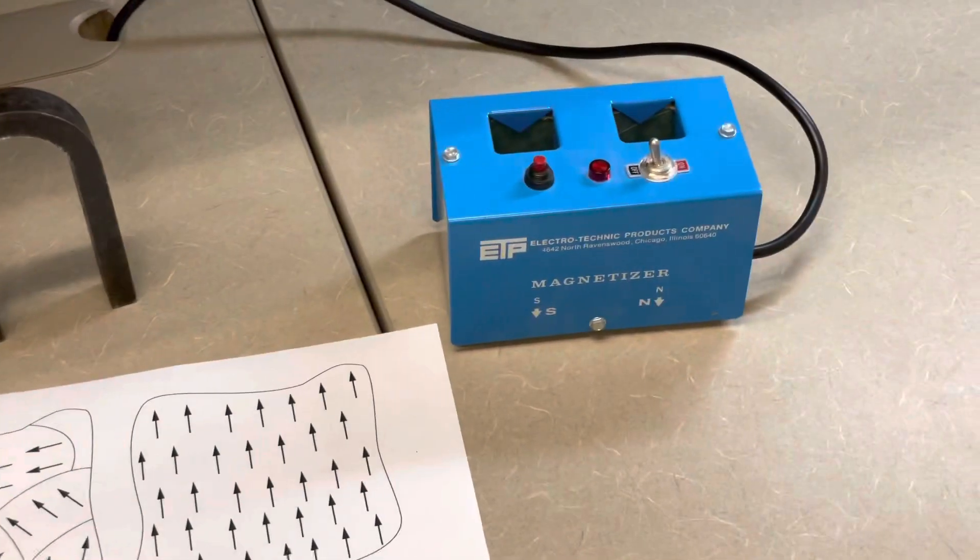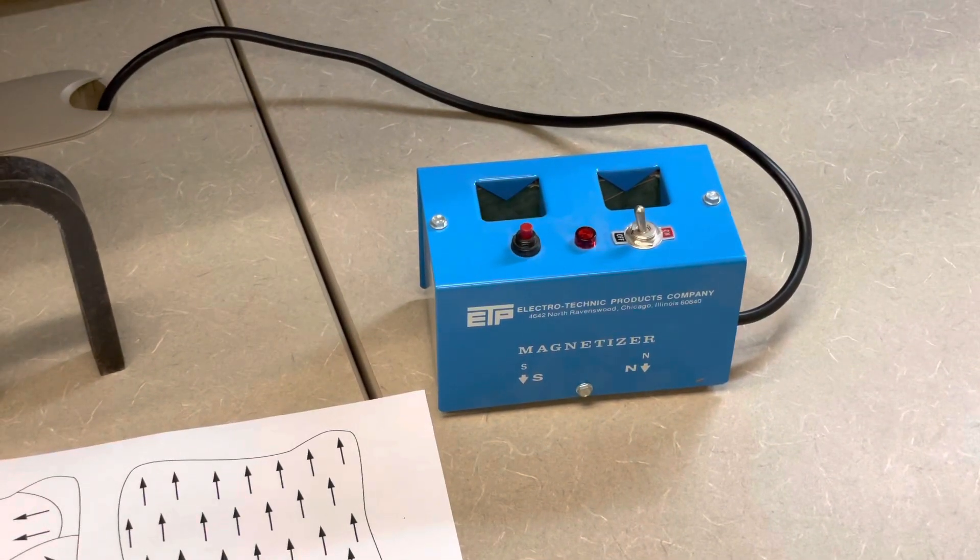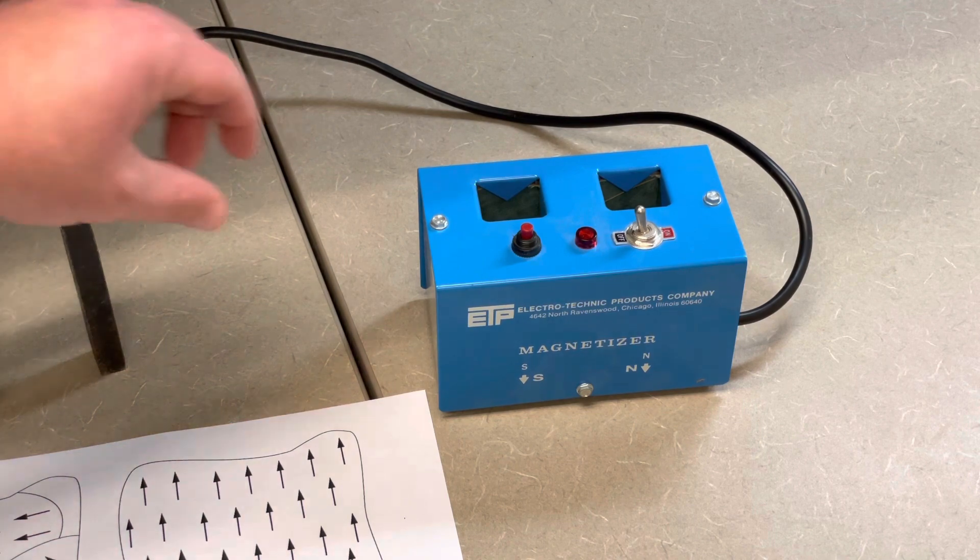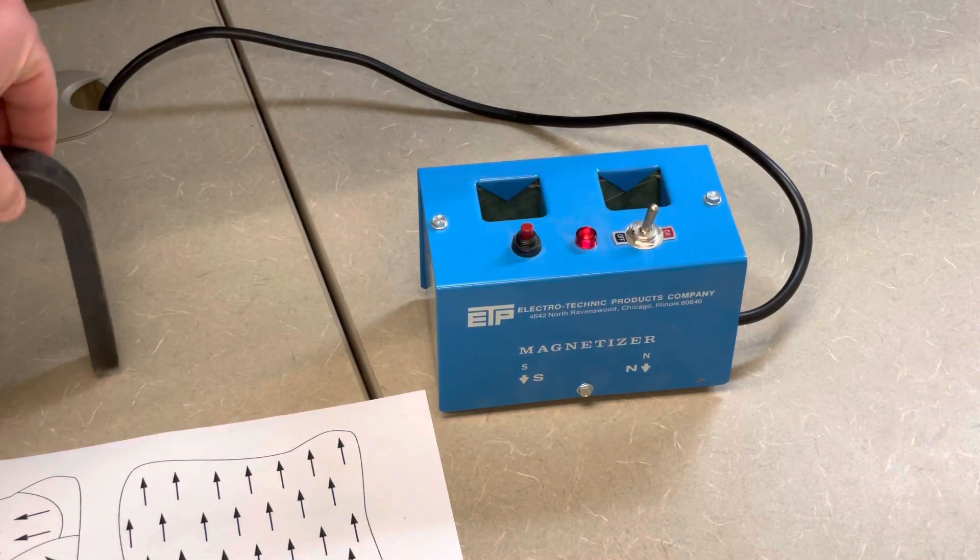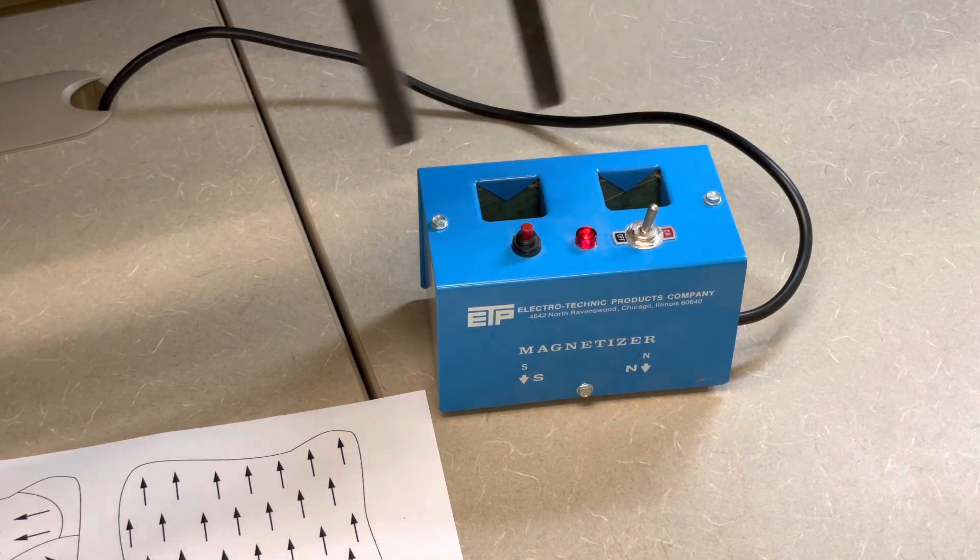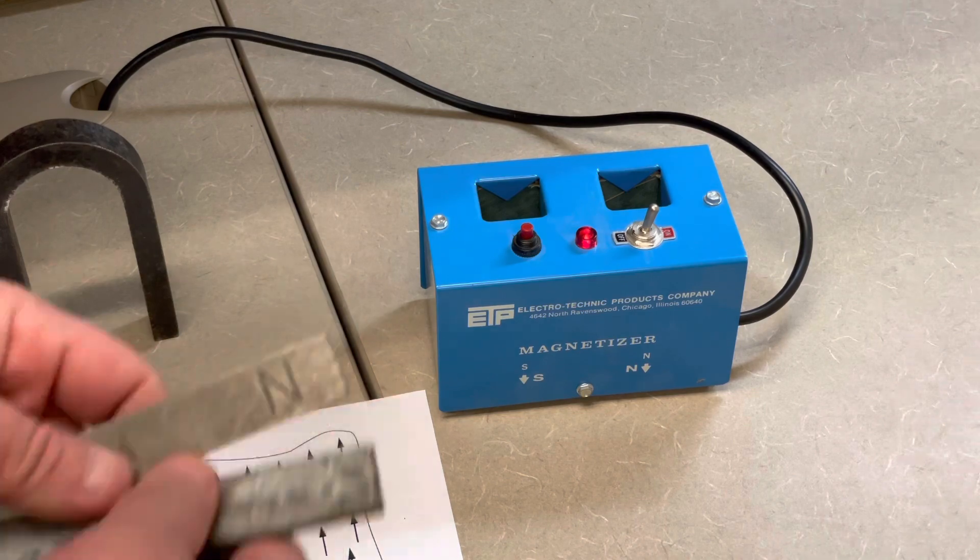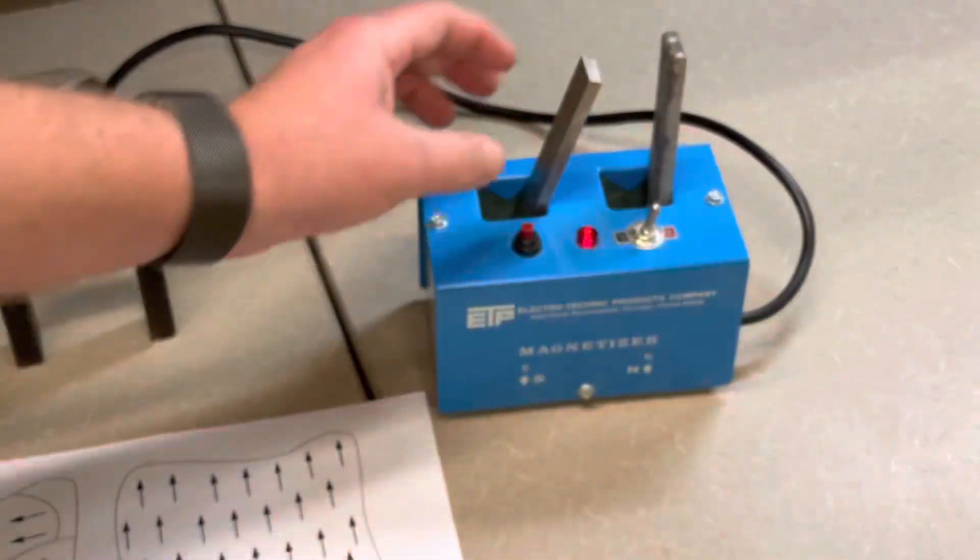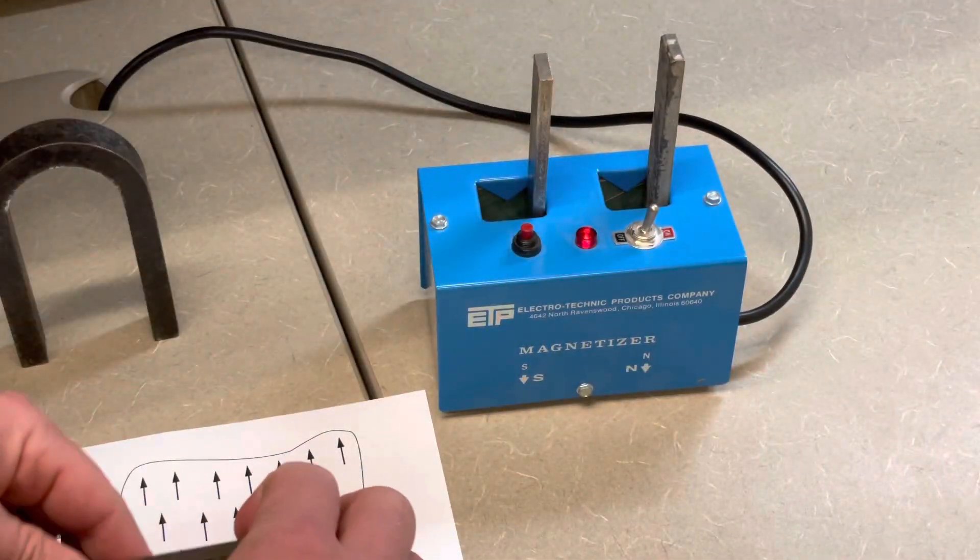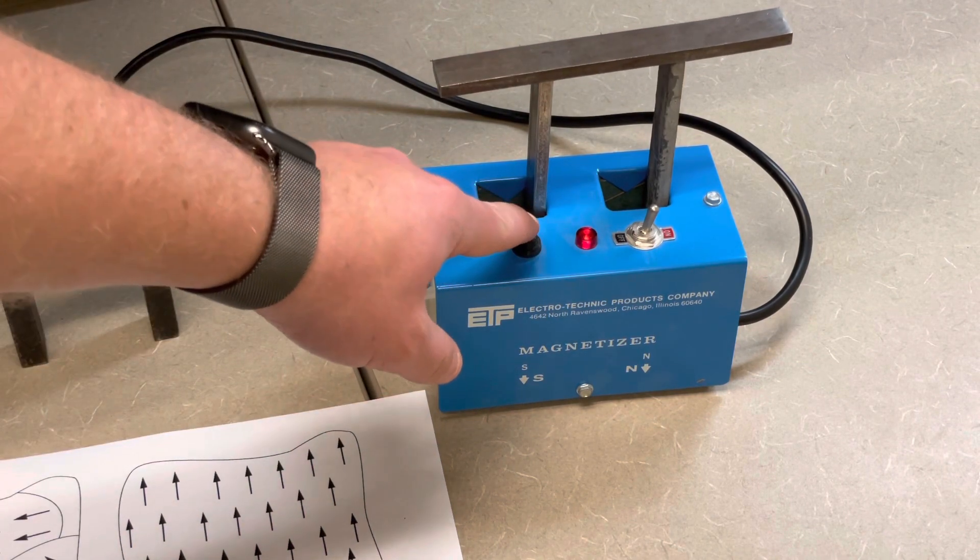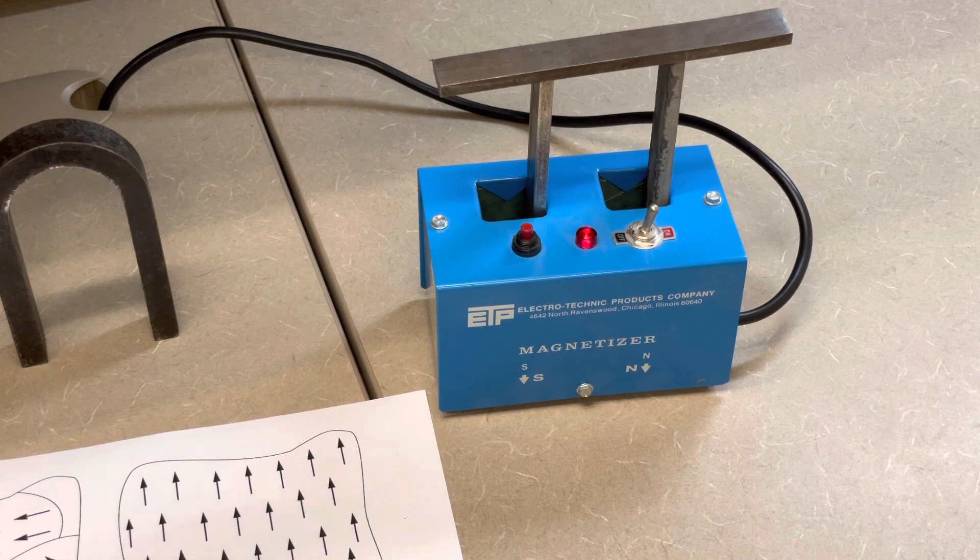To show you how this works, you would first just take the magnetizer, you would plug it into the wall. Then what you can do is turn it on. You can put your U-shaped magnet, or you could put three of these bar magnets, like such, onto the magnetizer, and then you just hit the button that says magnetize.